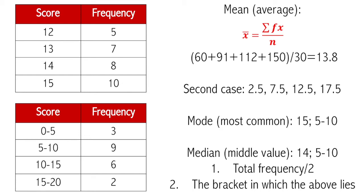The mode is still just the most common value. In the first table, we look for which value has the highest frequency — 10 appears to be the highest frequency and it belongs to 15, so 15 is the mode. In the second table there is no single value, but we can narrow it to the range: the 5–10 range occurs most frequently at 9 times, so that is the modal class.